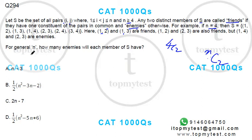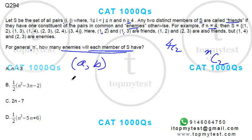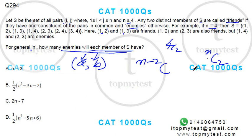For a general n, how many enemies will each member of S have? Finding enemies means nothing should be in common. So if you have (a, b) as your pair, you need to form sets that do not contain a and do not contain b. Overall there are n elements, out of which these two elements are already gone — you cannot use them. So you can form pairs using the remaining n minus 2 elements.